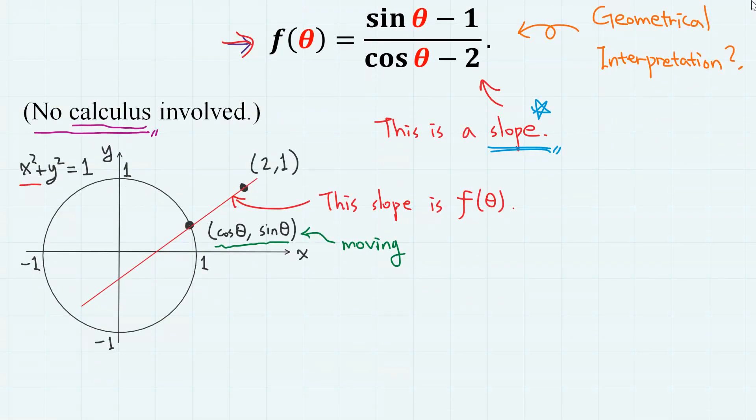Consider a unit circle x squared plus y squared equals 1. Some of you may have learned that any points on this unit circle can be parametrized as cosine theta comma sine theta. This means that cosine theta comma sine theta is the point that can move along the circumference of this unit circle.